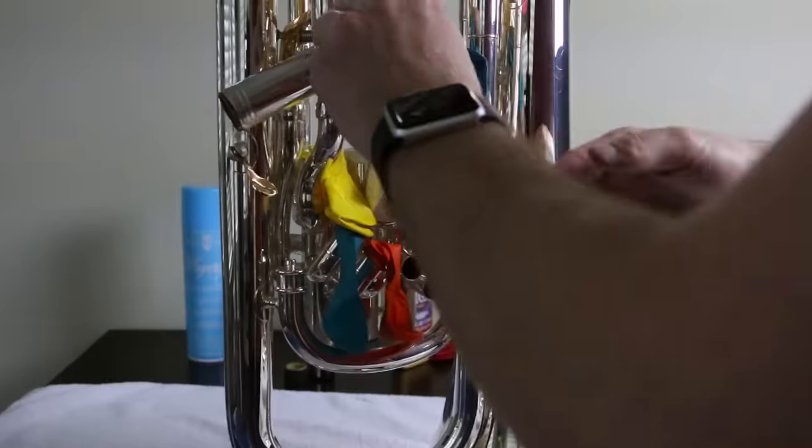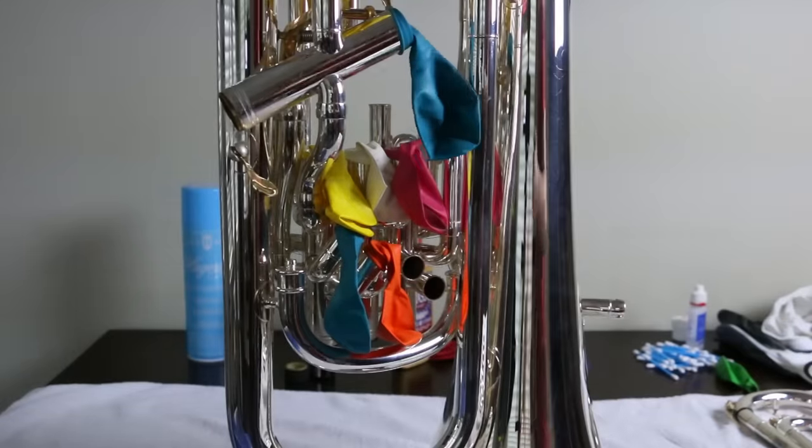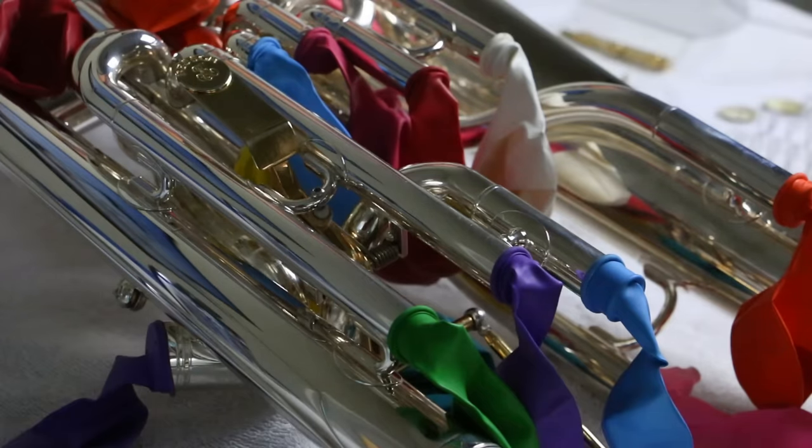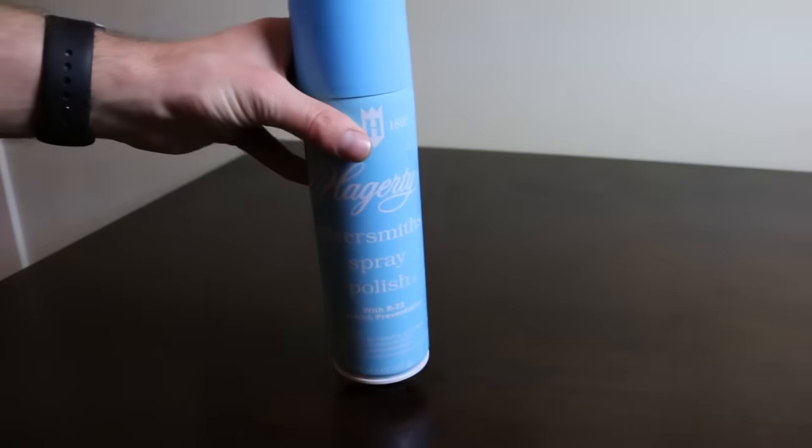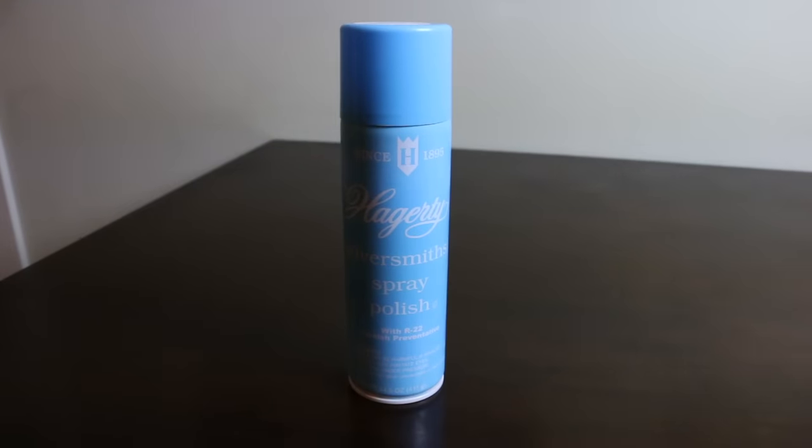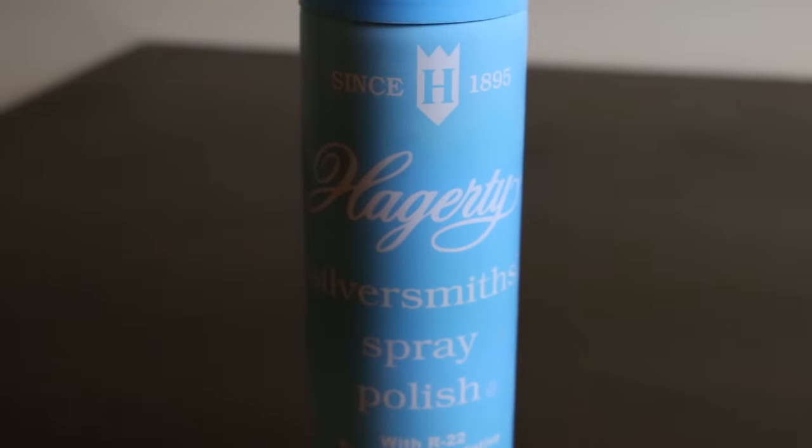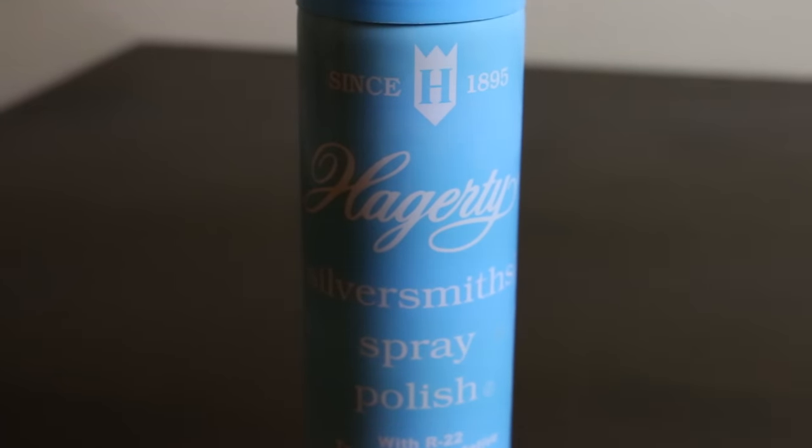Now for the balloons. Cover all of your openings in your horn except the bell with the balloons. This is to prevent the Hagerty's from going inside of your slides. Hagerty's is a spray polish and it's the best out there. If you're going to use this, you have to get the spray. Do not get the bottle kind. It's a hassle to use and it's not as good.